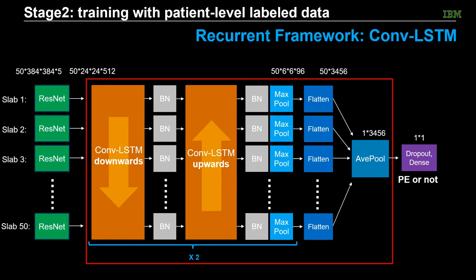Instead of using the classification results or the attention maps of the ResNet as input to the recurrent framework, we use the last convolutional layer after activation to provide complete information embedded in the feature maps. We also tried using the classification results and the attention maps from the ResNet as input to the recurrent network in stage 2, but the results were not nearly as good.